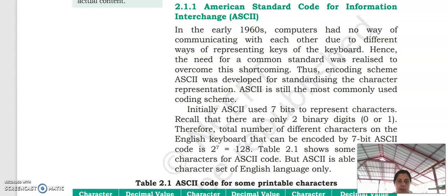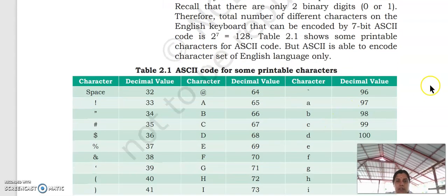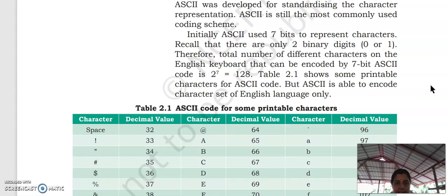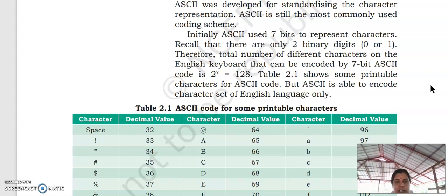Now also we are using ASCII representation normally. Initially ASCII used 7 bits to represent characters. There are 2 binary digits — 0s and 1s. Our characters in English on the keyboard can be encoded into 7-bit ASCII codes. That means 2 raised to 7 equals 128 codes are there. These are fixed set values. We cannot change this ASCII value.